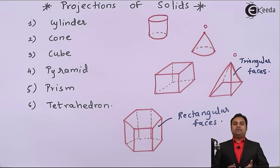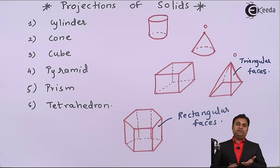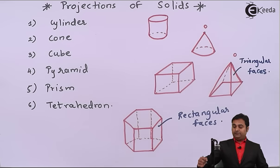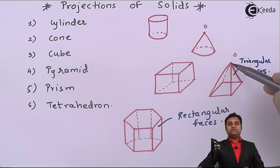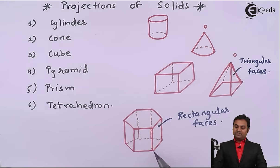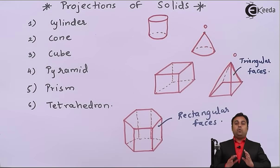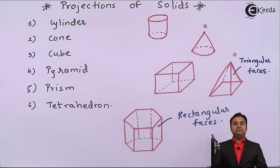In case of pyramid, the shape of the base defines the pyramid and at the top it is connected to a common vertex or corner. Whereas in case of prism, the base edges define the shape — here it is a hexagonal prism — and hexagon is present at the top and bottom, whereas all the sides have rectangular faces.